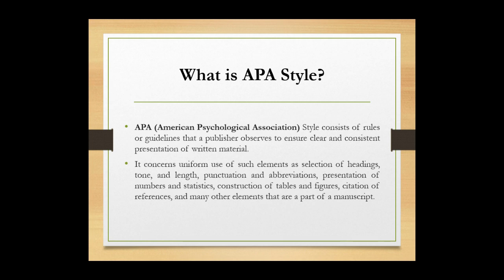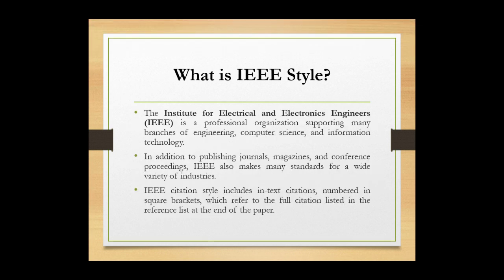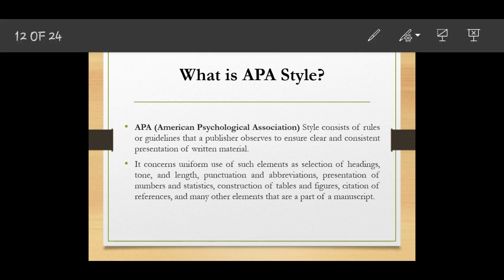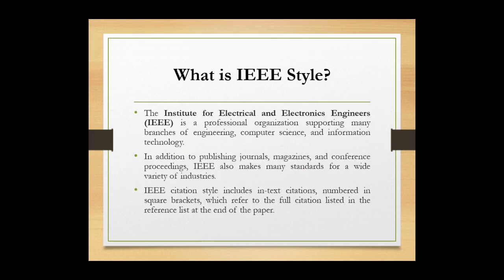Let's look briefly at APA style and IEEE style. Starting with APA style: this consists of rules and guidelines that the publisher observes to ensure clear and consistent presentation of written materials. In APA style, you present using the author's last name followed by the date of publication in brackets — for example, Mugosi (year). That is how we do the APA style presentation.